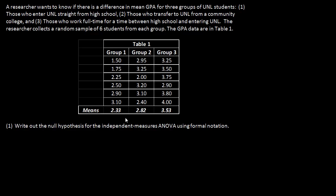So let's try. First of all, write out a null hypothesis for the independent measures ANOVA using formal notation, which is like... okay. Null hypothesis is Mu 1, there is no difference, Mu 2 and Mu 3. They are all the same. That's a null hypothesis.